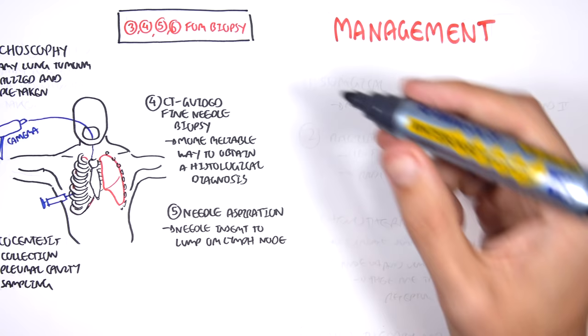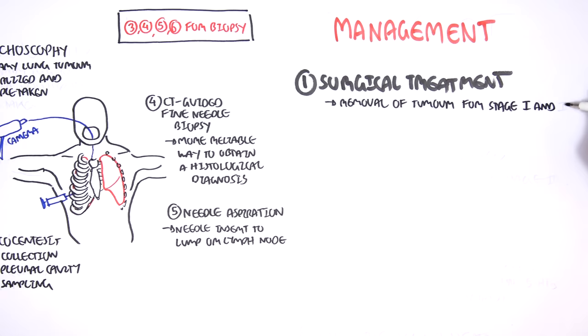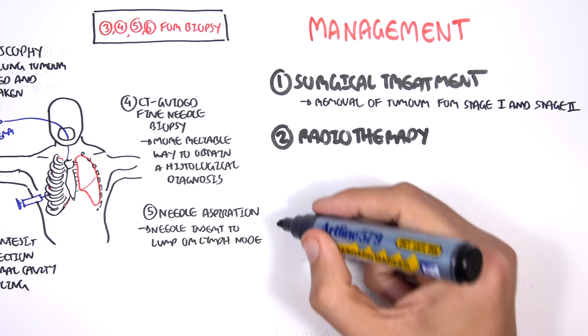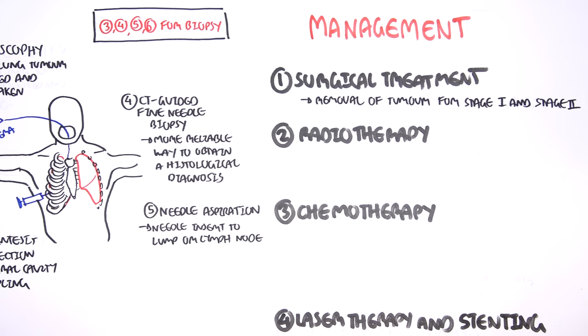Management is the next topic we will talk about. First, surgical treatment which is the most important. Surgical treatment is for the removal of tumor, of the lung tumor, cancer, for stages one and stages two. After surgery, or if surgery cannot be performed, there is also radiotherapy and chemotherapy, as well as laser therapy and stenting.